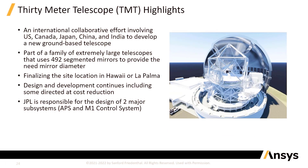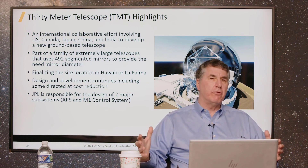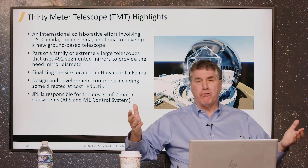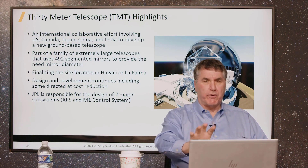What is the 30-meter telescope? It's an international collaborative effort involving many different nations, including the U.S. and Canada, Japan, China, and India. They are developing this new ground-based telescope. It's part of a family of what they call extremely large telescopes. It uses 492 segmented mirrors to achieve the mirror diameter. The idea of having a single mirror that's 90-plus feet in diameter with the required precision - you can't do that with a single mirror. So what you have to do is create a segmented mirror, build the mirror up from these different segments, and then control each of the individual segments to give you the equivalent of a cohesive single mirror. That's one of the real critical technologies in these extremely large telescopes.